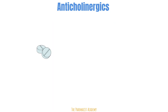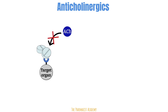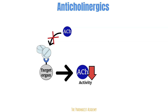Anticholinergics are drugs that bind to the muscarinic receptor on the target organ and occupy that space so that the body's acetylcholine cannot bind to it. This leads to a decrease in the activity of acetylcholine. An example of a drug in this class is atropine, which is used for symptomatic bradycardia as part of advanced cardiovascular life support.